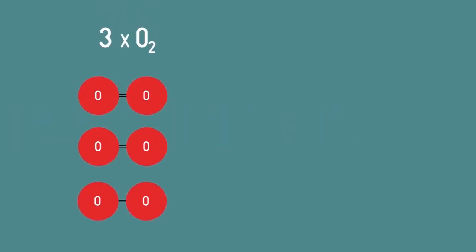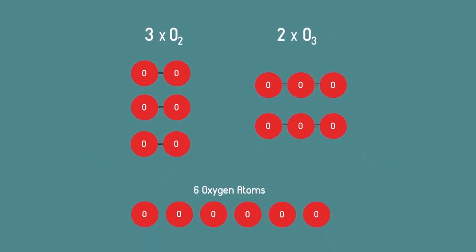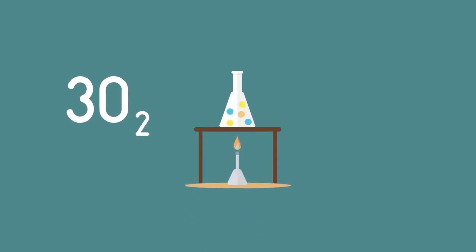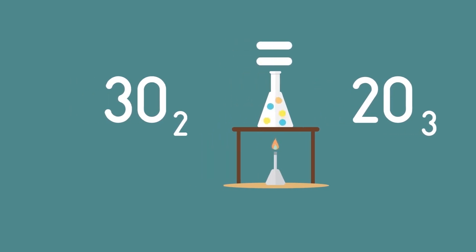So here there are six oxygen atoms, and here and here, but these are three different ways of arranging the atoms. Chemical reactions are all about rearranging atoms. Chemical reactions can be represented by simple equations so long as the number of atoms on each side of the equal sign remains the same.